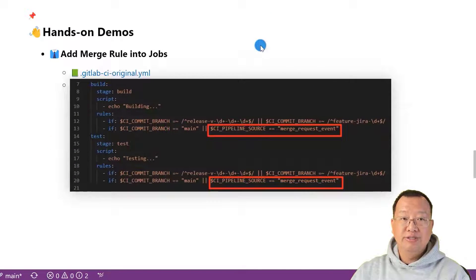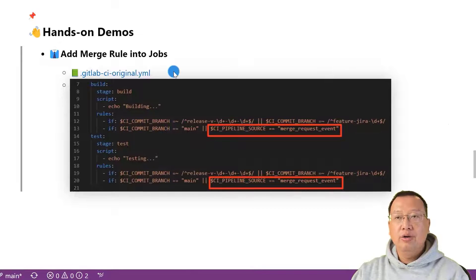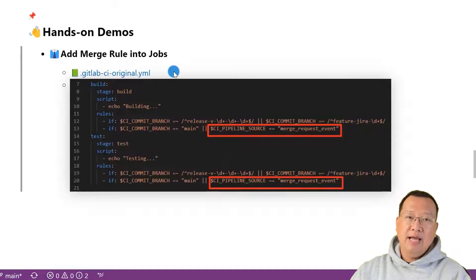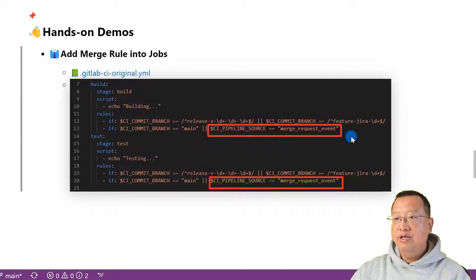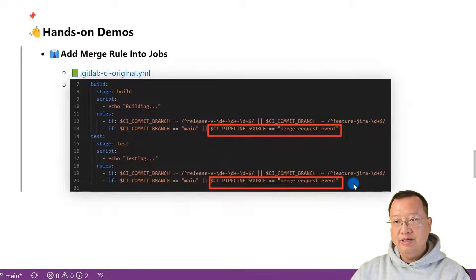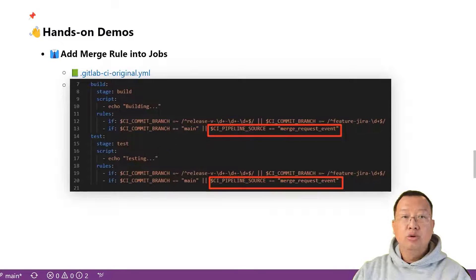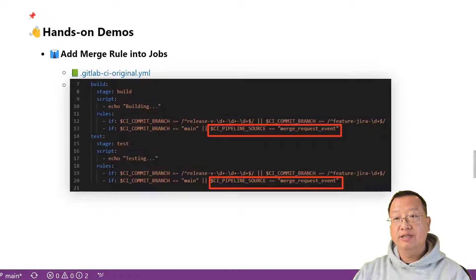Demo 1: Add the merge rule into jobs — this is the simple way. You can get the existing pipeline YAML file right here: GitLab CI original.yaml. It's straightforward — just add CI_PIPELINE_SOURCE equal to merge_request_event in the rules under the build job. We do the same thing and add the built-in parameter in the test job as well. To see the magic happen, we have to create a merge request — you need to create one in your project to see your changes work.